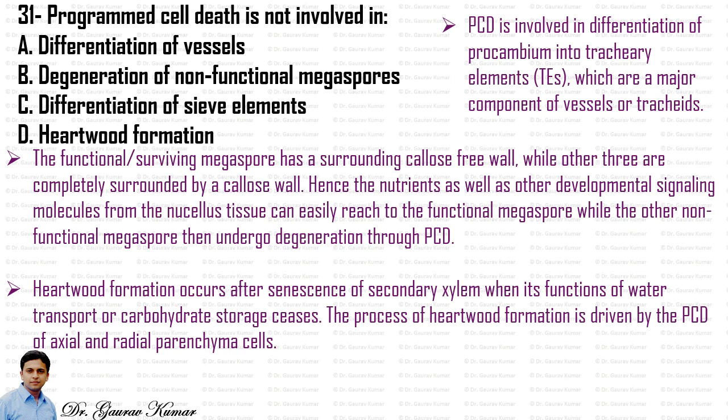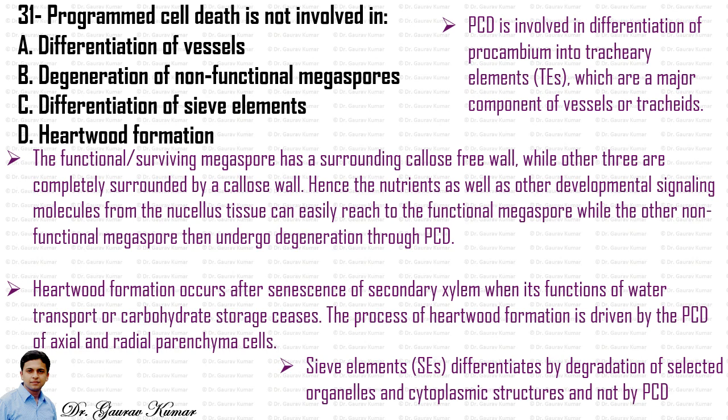The process of heartwood formation is driven by PCD of axial and radial parenchyma cells. While in sieve element differentiation, the sieve element differentiates by degradation of selected organelles and cytoplasmic structures, and not by PCD. So the answer is that programmed cell death is not involved in differentiation of the sieve elements.